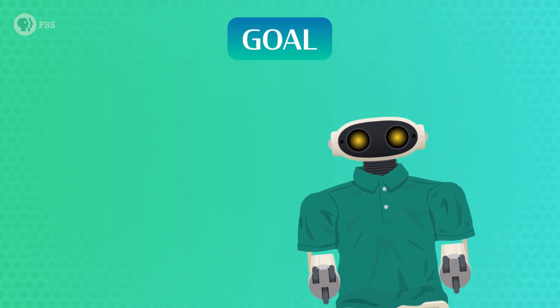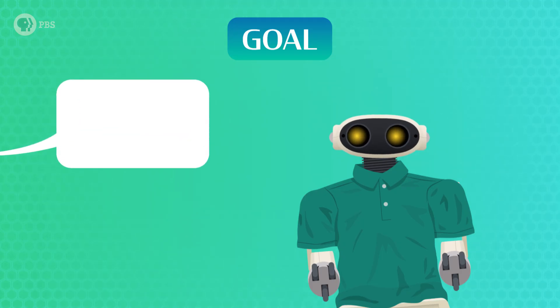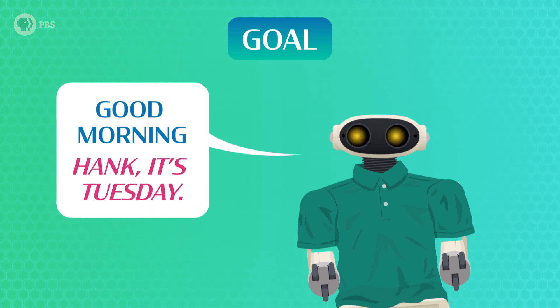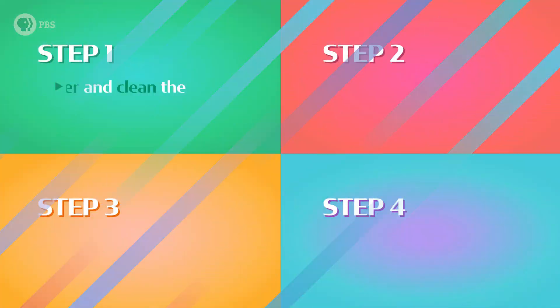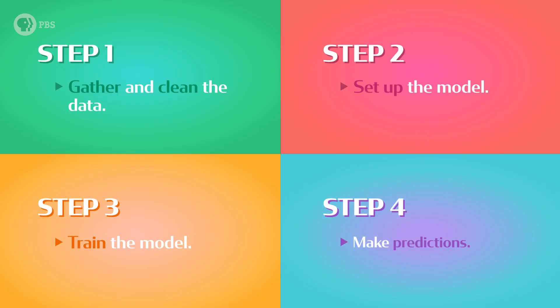We're going to build an AI model that plays a clever game of fill in the blank. We'll be able to give John Greenbot any word prompt like "good morning" and he'll be able to finish the sentence. Like any AI, John Greenbot really won't understand anything, but AI generally does a pretty good job of finding and copying patterns. To build a natural language processing AI, we need to do four things: first, gather and clean the data; second, set up the model; third, train the model; and fourth, make predictions.